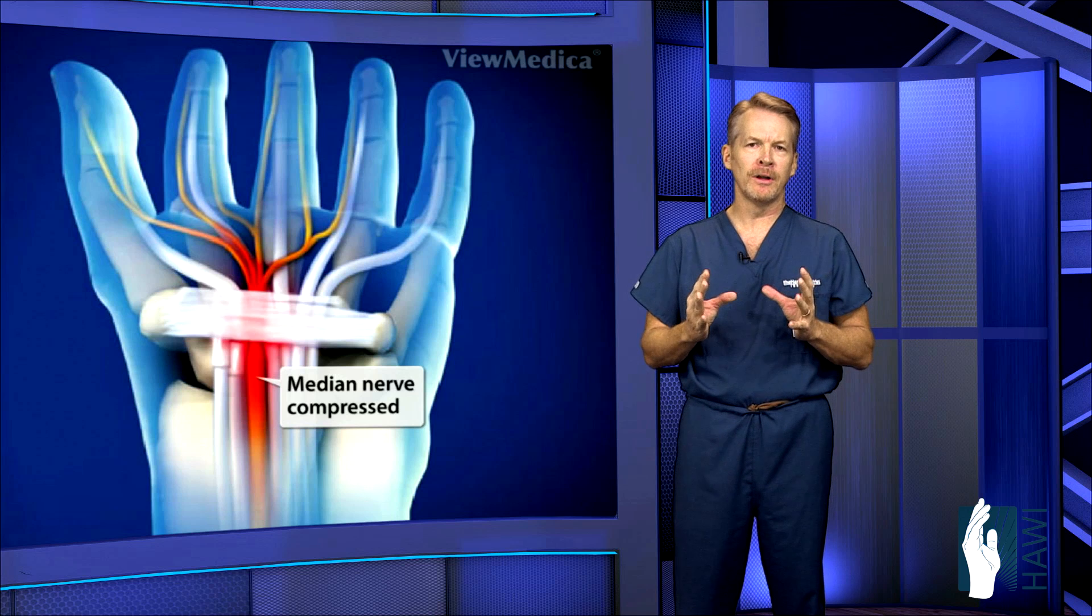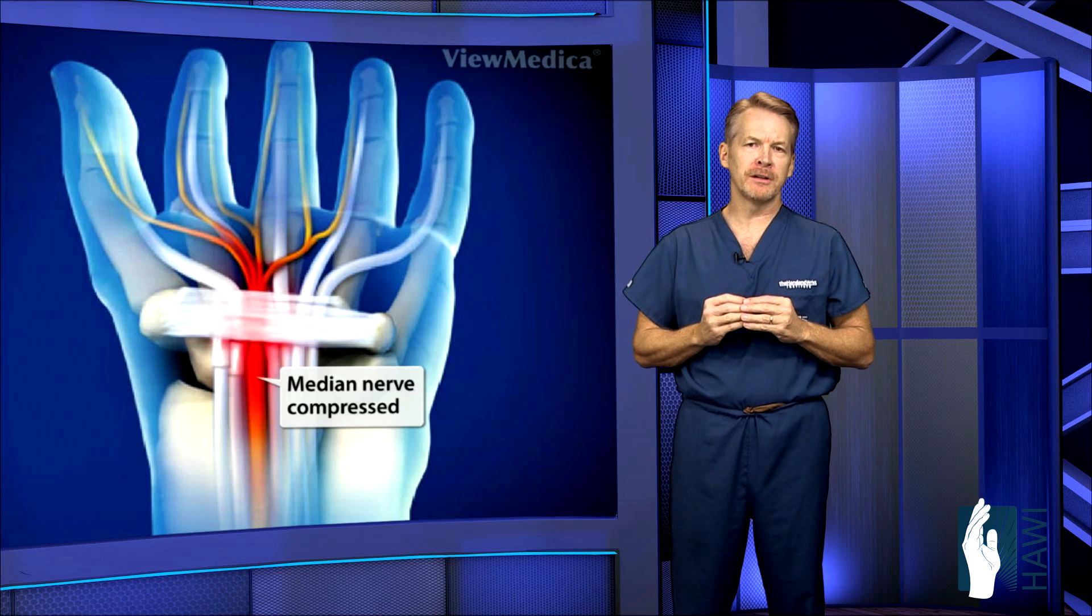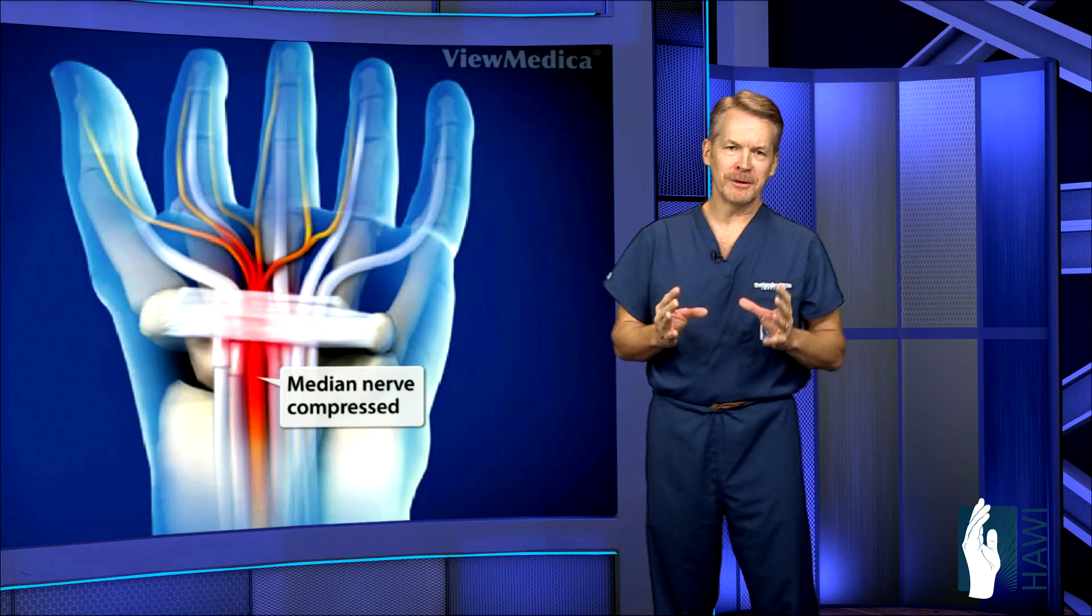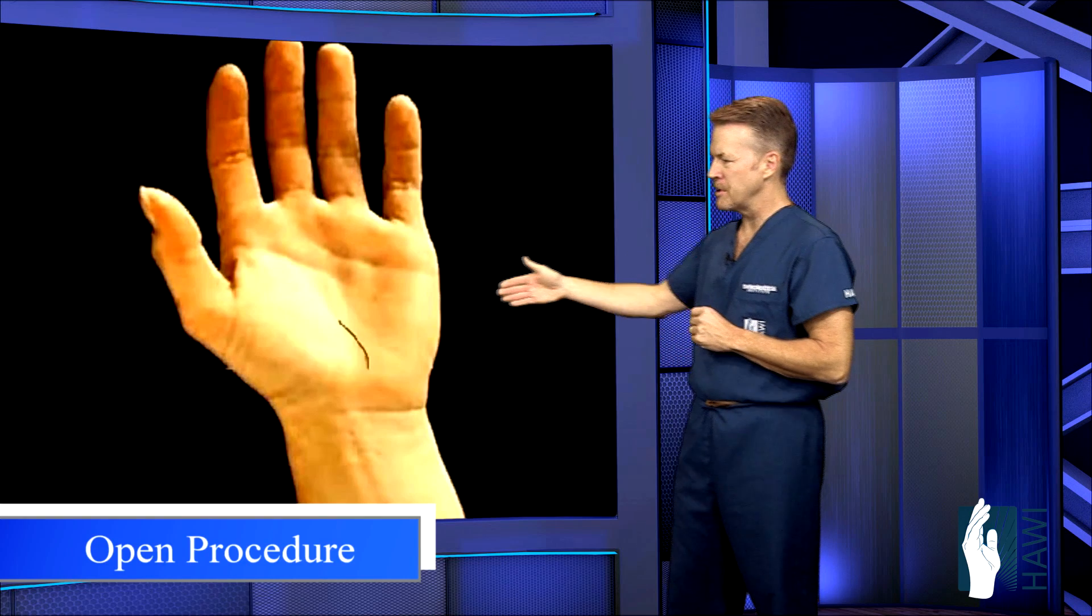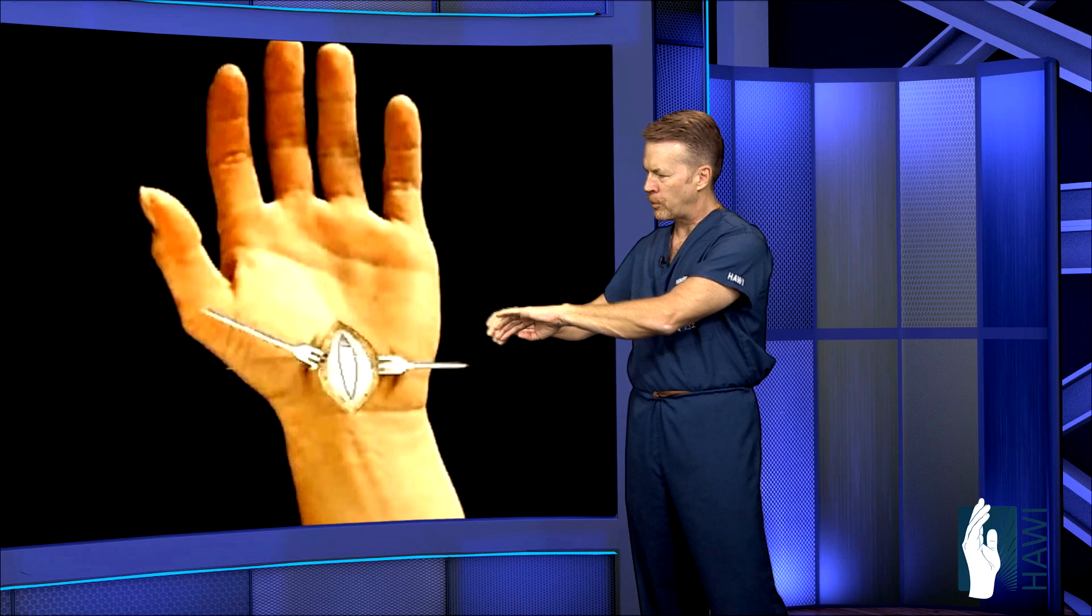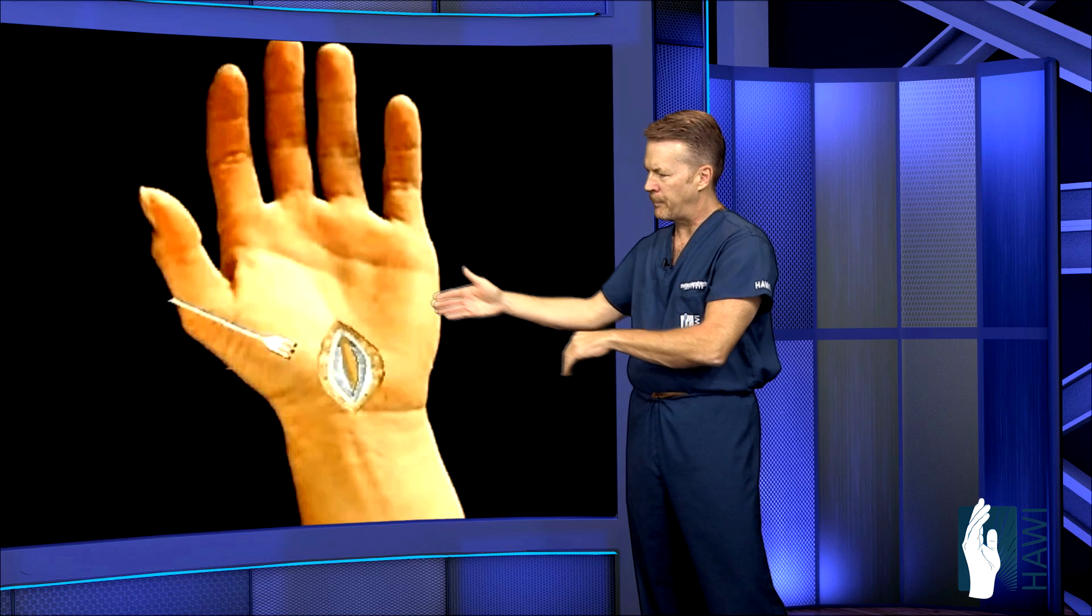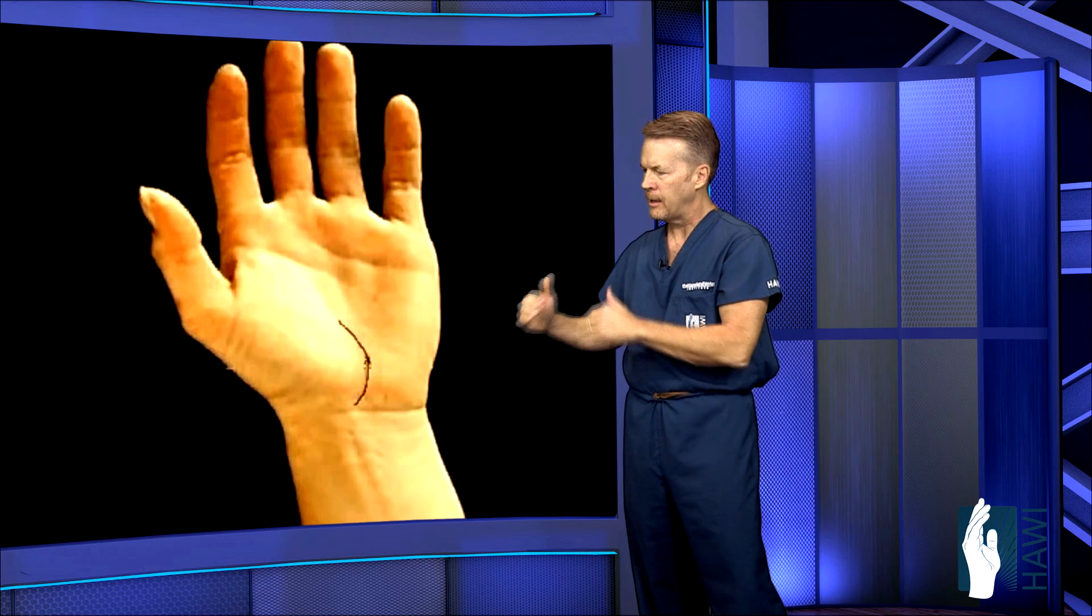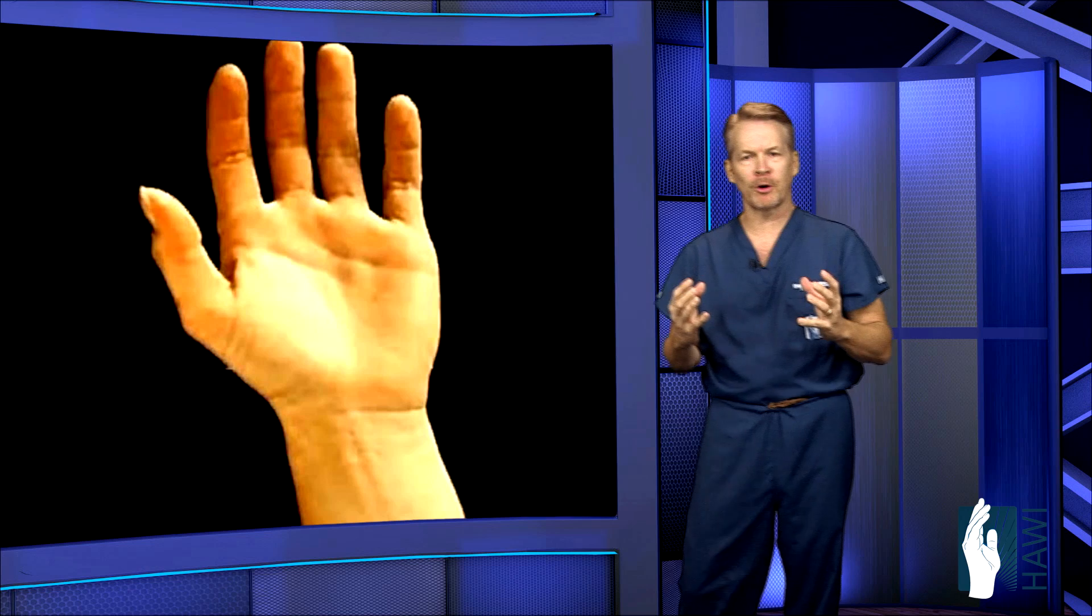So first let's look at the traditional, more older fashion, open carpal tunnel procedure. This is a five centimeter incision being made through the palm right here through this very sensitive skin. Retractors are going in to pull the skin and fat back and you can see the ligament being cut from the top down to open up the carpal tunnel.